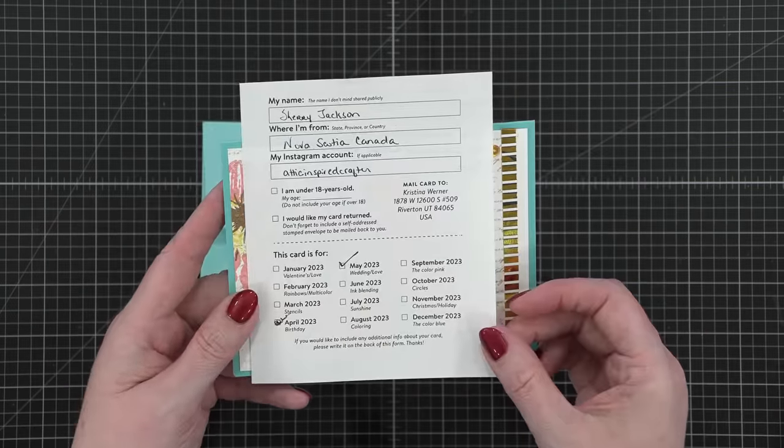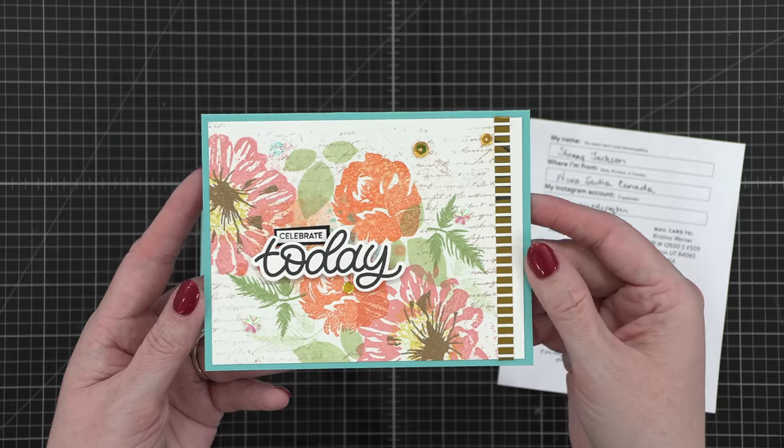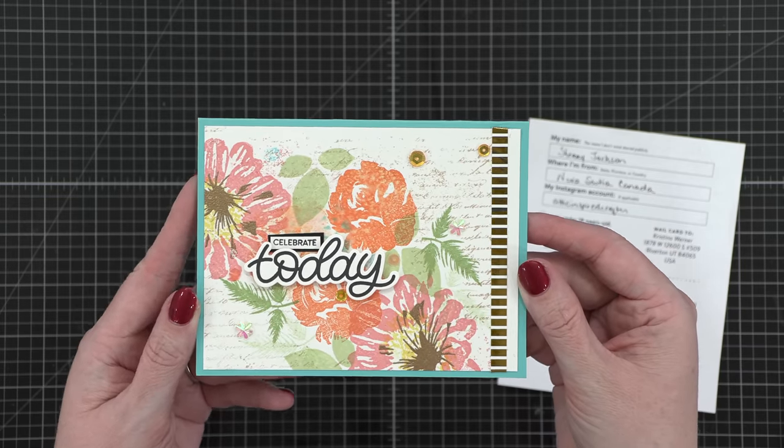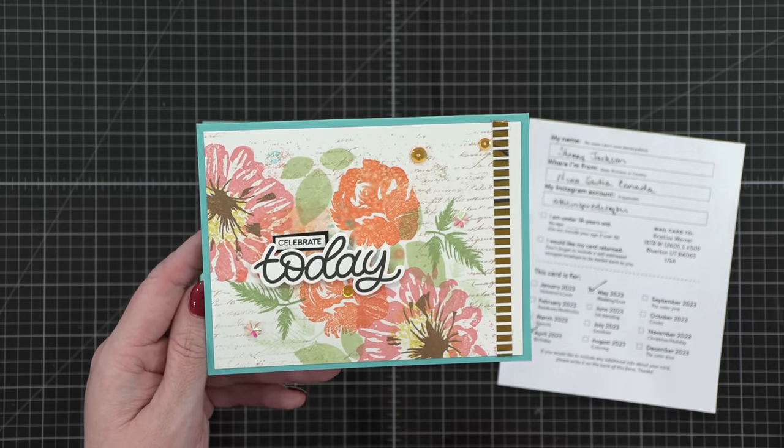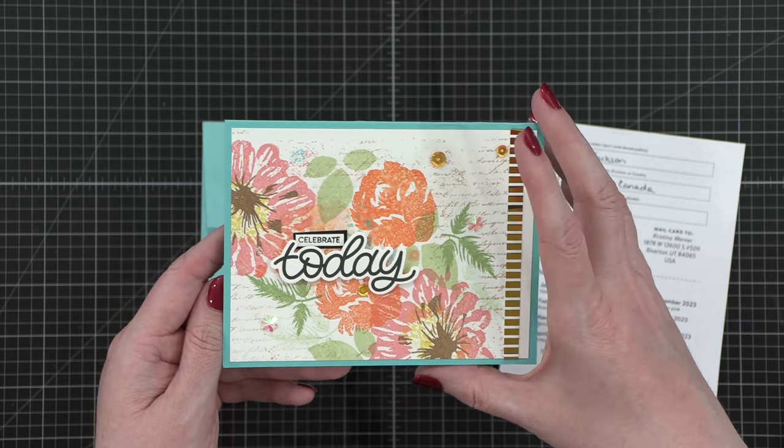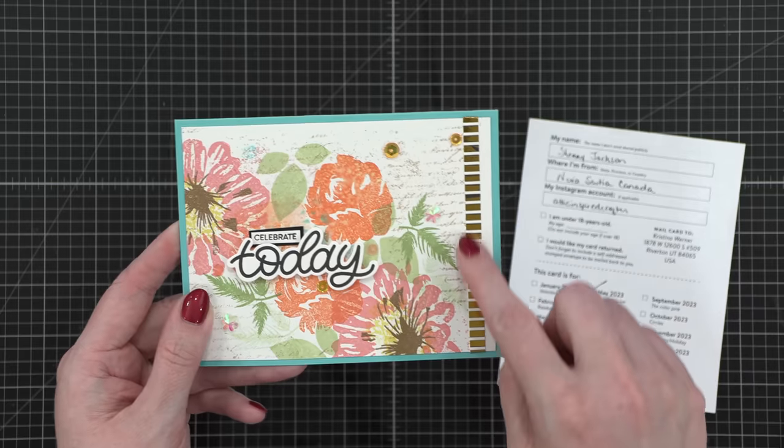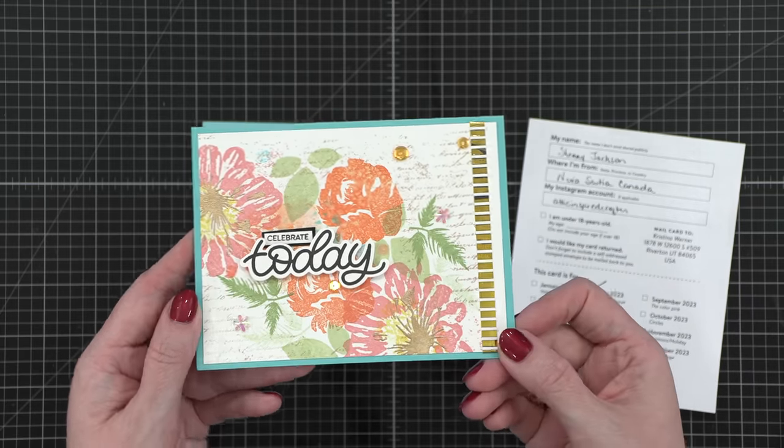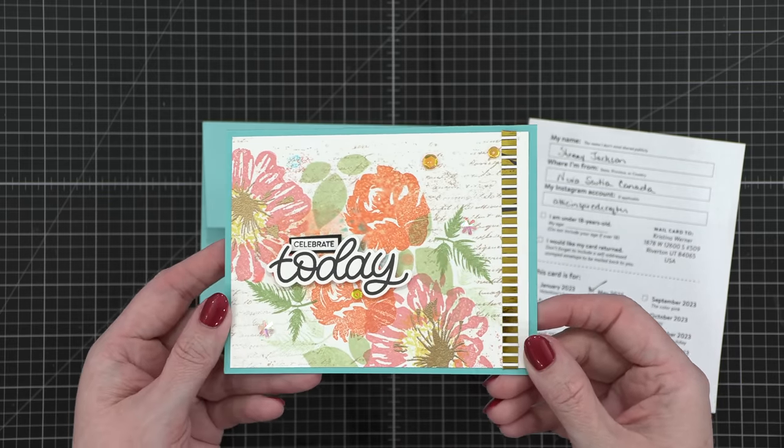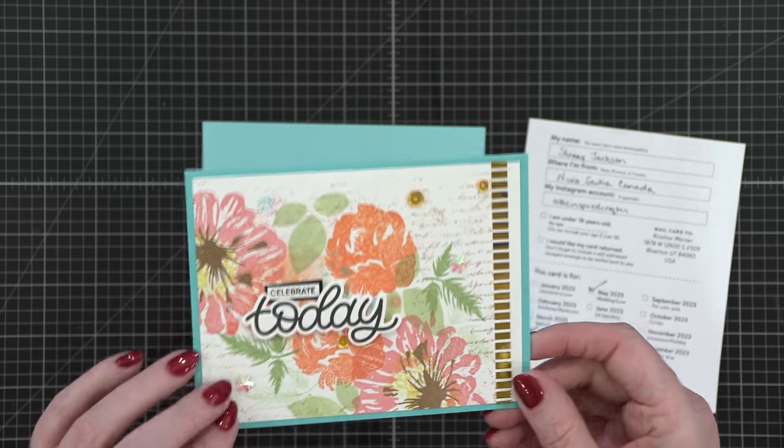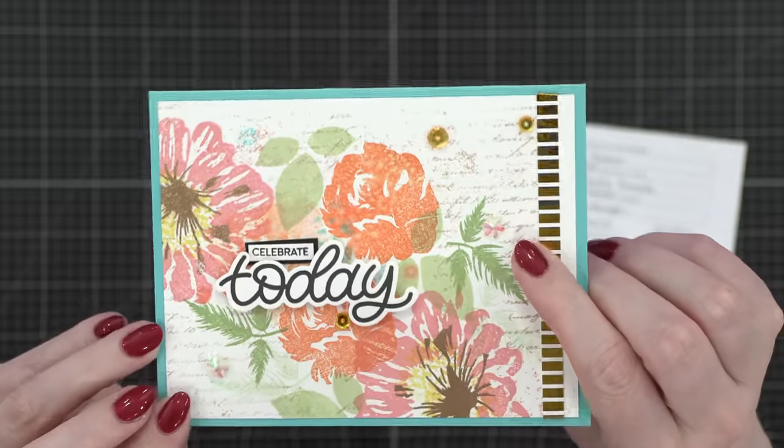This card is from Sherry in Canada and it's for the month of May. So wedding or love. And look at this beautiful color combo. I wouldn't necessarily think about this color combo for a wedding card, but it definitely works. Those very like summer colors with a nice rose pink and orange and then some greens. So pretty. And then inside, happy anniversary. I love that. And I love this little pop of gold foiling over here on the side. Just a great way to highlight the pops of gold from the embossing as well. So fun. And I love this little sequin. These two little sequin pieces. They're little kind of star shapes. They look so cool.